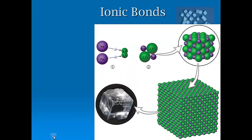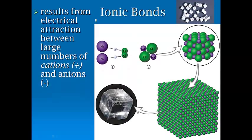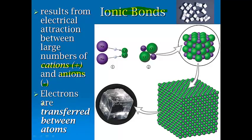For ionic bonds, and we've seen these terms before, ionic bonds result from the electrical attraction between large numbers of cations that are positively charged, and anions that are negatively charged. The big reason I had us learn these terms earlier in the year is because now they're really important. Electrons are transferred between atoms. You actually get an electron to be donated to something else.